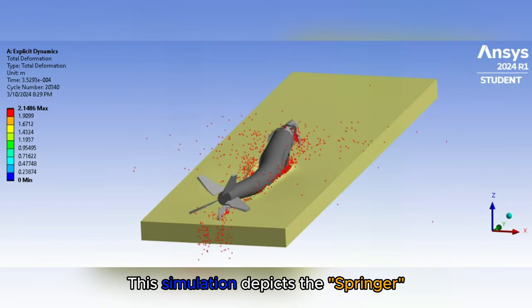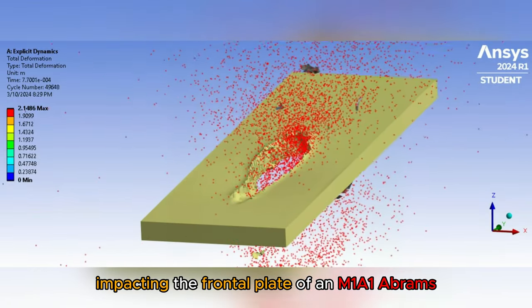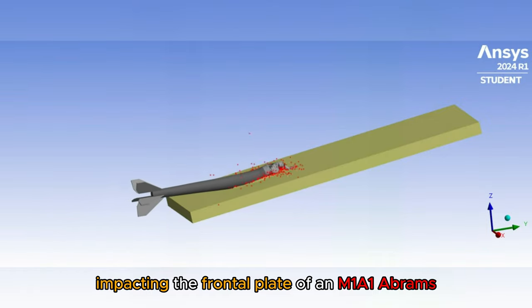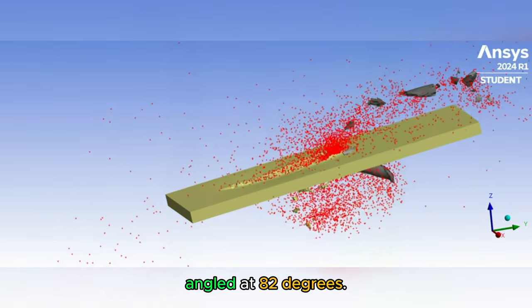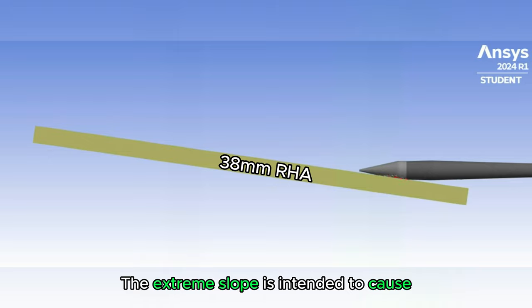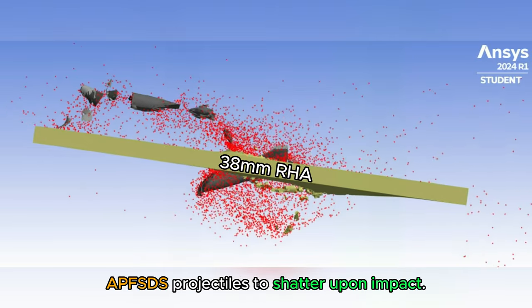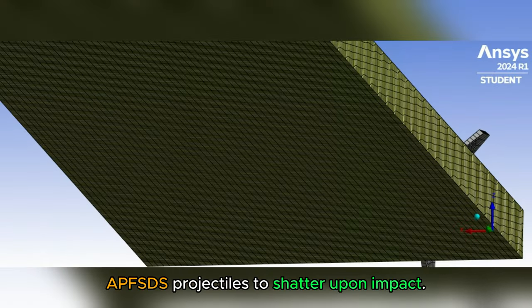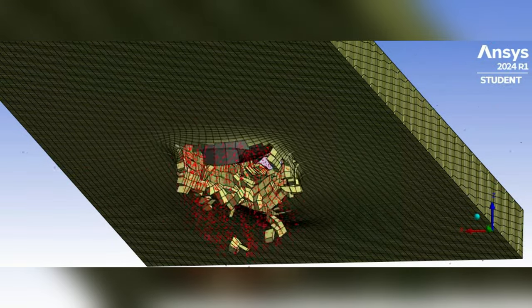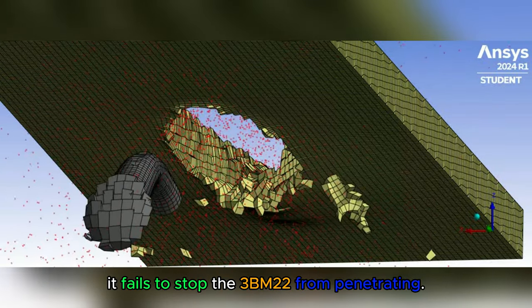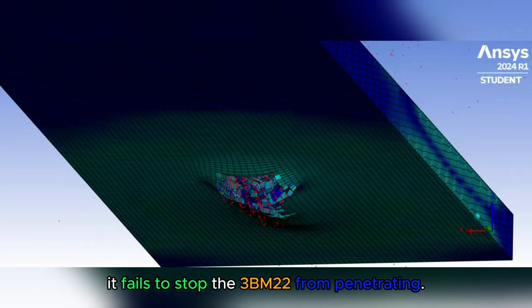This simulation depicts the Springer impacting the frontal plate of an M1A1 Abrams, angled at 82 degrees. The extreme slope is intended to cause APFS-DS projectiles to shatter upon impact. Unfortunately, it fails to stop the 3BM-22 from penetrating.